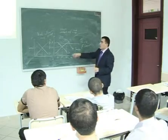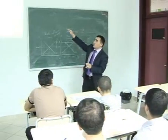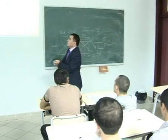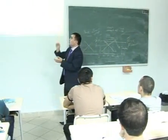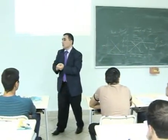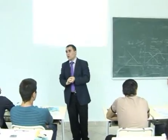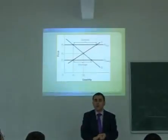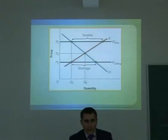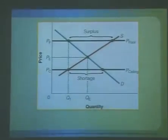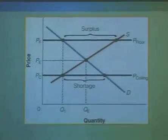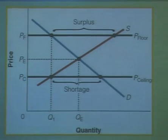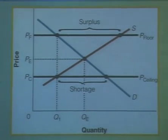So in this case, we definitely know that price floor - as from this graph and from your previous knowledge - will cause a surplus. And in this real life example in Turkey, government buys the surplus, and then there is no surplus. Everybody is happy.